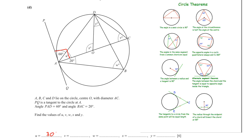The next one is v. First, write down 30 here. To find v, we know this is a diameter and this is the angle opposite the diameter. The rule is: the angle in a semicircle is 90 degrees. Therefore angle D is 90 degrees. Using the angle sum property of a triangle: 90 plus 30 plus v equals 180, so v equals 180 minus 120, which gives 60.